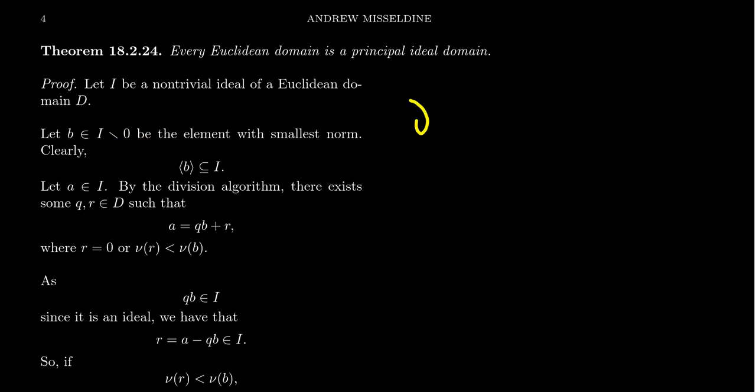Because of the Euclidean norm that every Euclidean domain has we have this function that will send our elements to something inside the natural numbers. As it's the set of natural numbers we have the well ordering principle. So there is an element of smallest norm we're going to choose that element to be B. This is actually why we threw zero out because by construction the norm is not defined for the zero element.